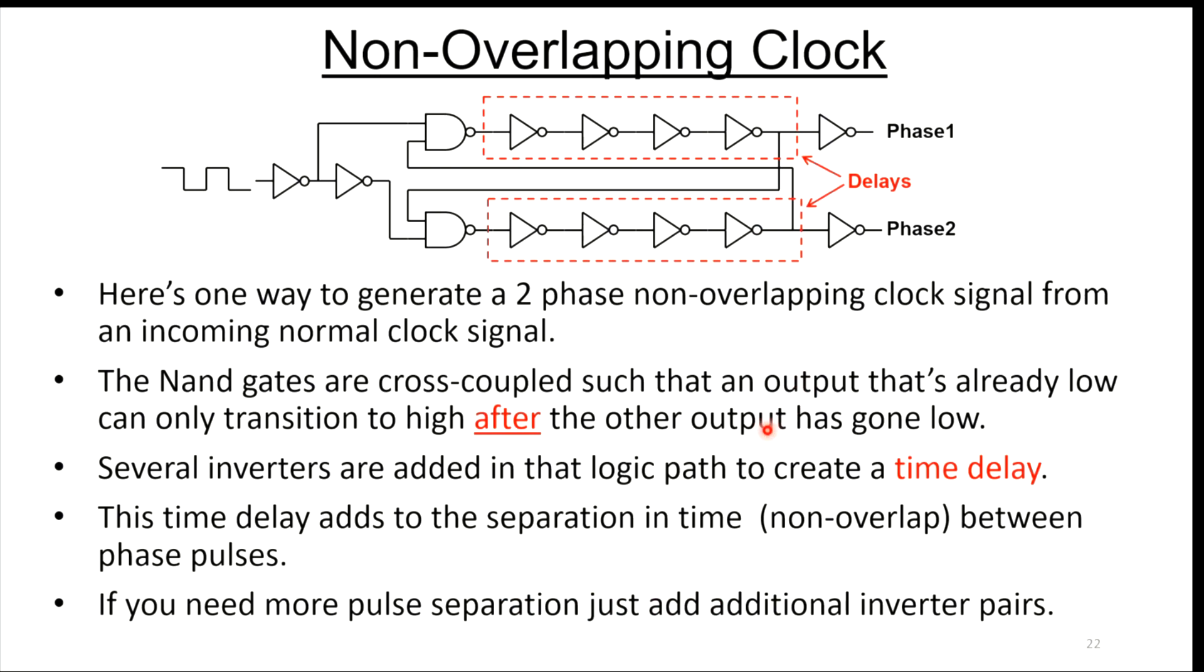There's a couple ways to generate non-overlapping clock. This is probably the most common way. You have a single clock coming in here, but then you set up some logic gates where the output of one logic gate is fed back to the input of the other logic gate. This cross-coupling is done such that an output that's already low can only transition to a high after the other output has already gone low. That gives you that break before make.